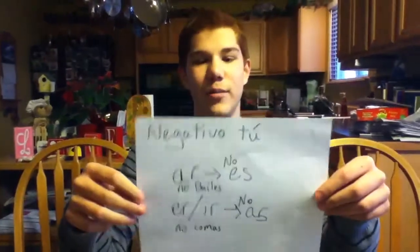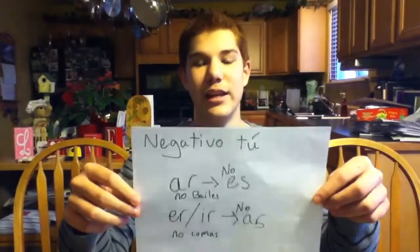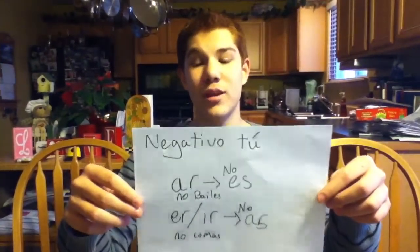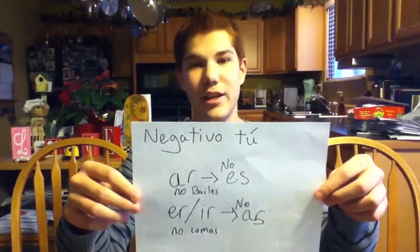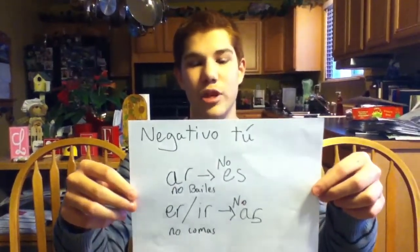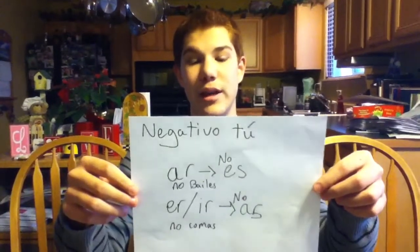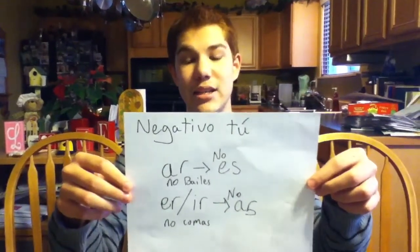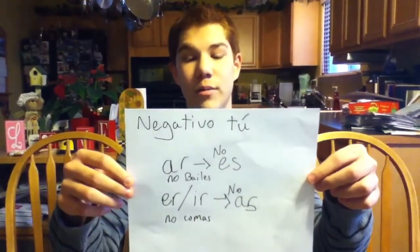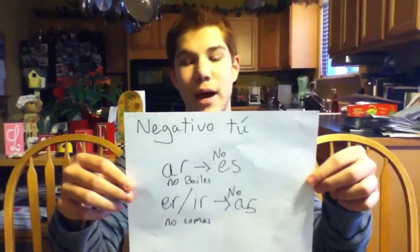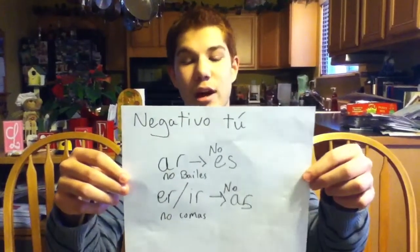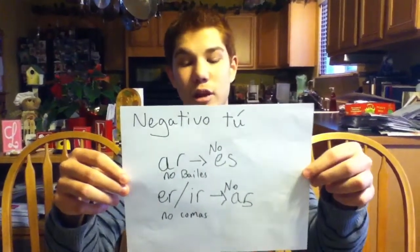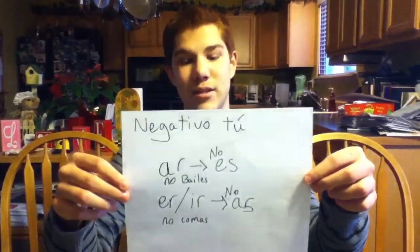To conjugate a verb in the tú negative form, conjugate it in the yo form, drop the O and add ES. For an AR verb: no bailes. For an ER or IR verb: no comes.